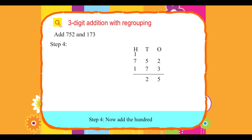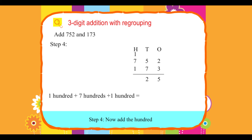Step 4: Now add the hundreds. 100 plus 700 plus 100 equals 900.